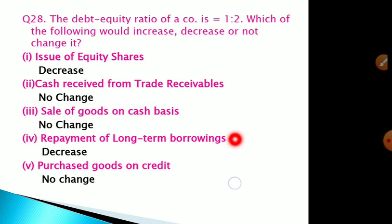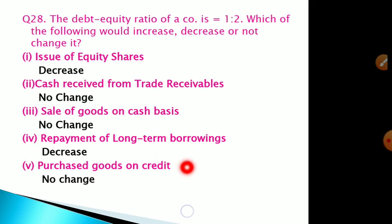Fourth transaction: repayment of long-term borrowings. This decreases debt, which is the numerator, while the denominator (equity) remains the same. So the ratio will decrease. Fifth transaction: purchase of goods on credit. Inventory increases (current asset) and creditors increase (current liability). Since neither long-term debt nor equity is affected, there is no change in the debt equity ratio.